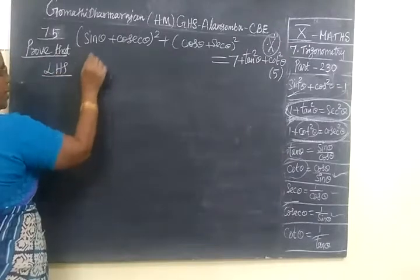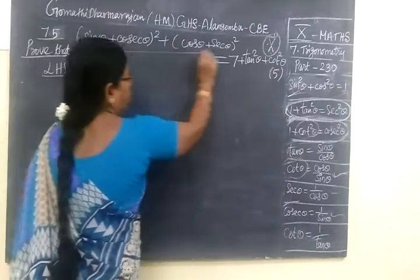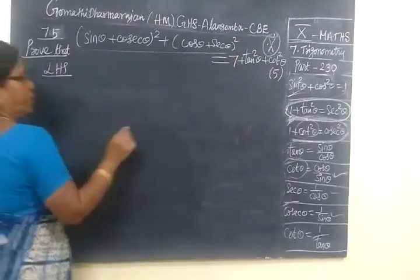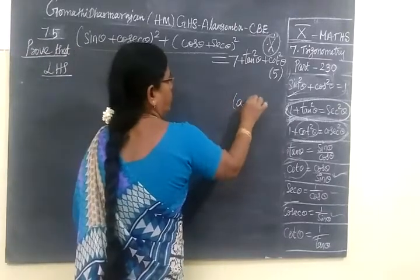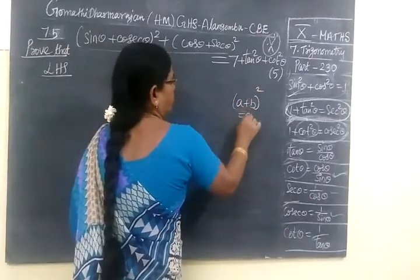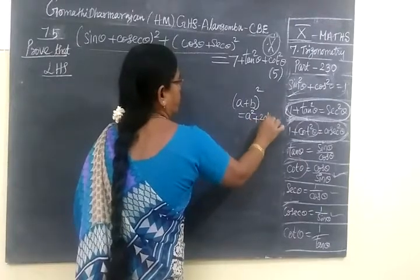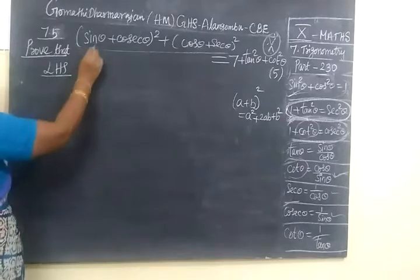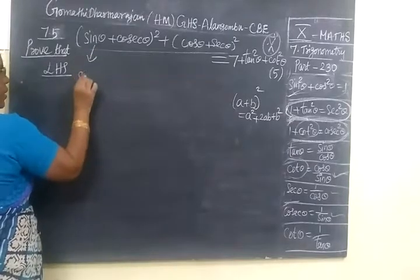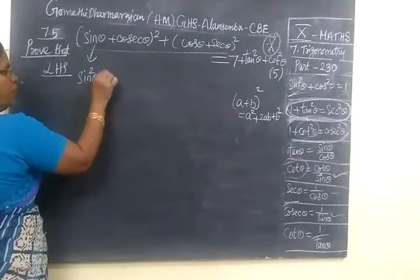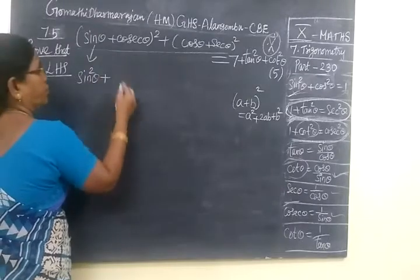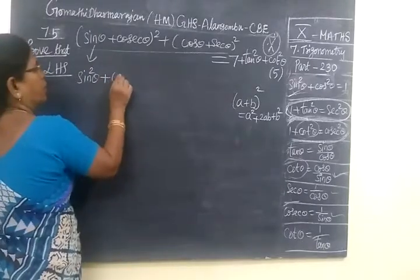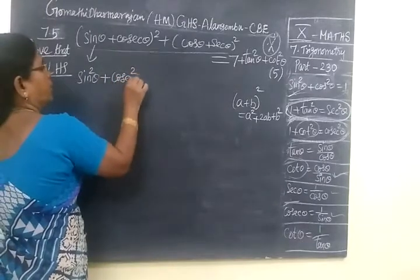Now you take LHS. LHS is the same. Now A plus B whole square, you know very well. A plus B whole square is equal to A square plus 2AB plus B square. So using this, A square sine square theta plus B square sine square theta.